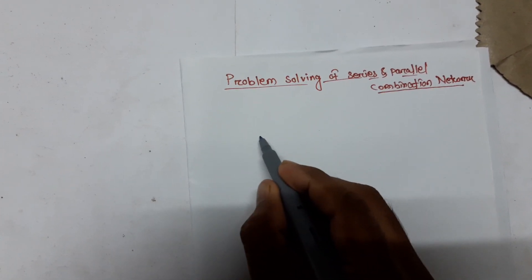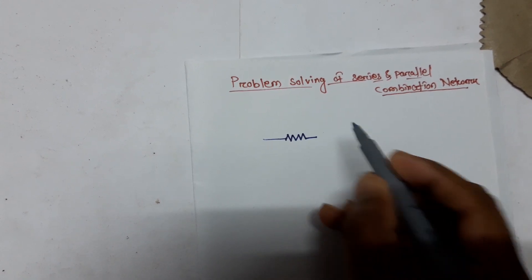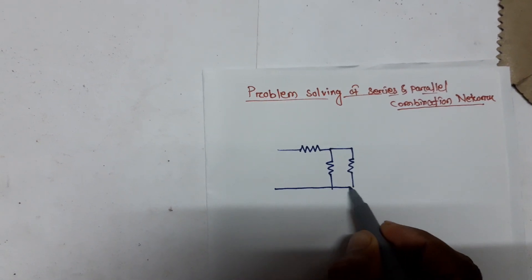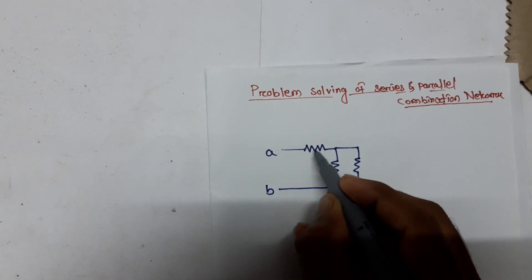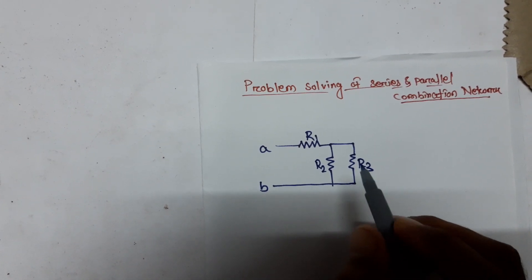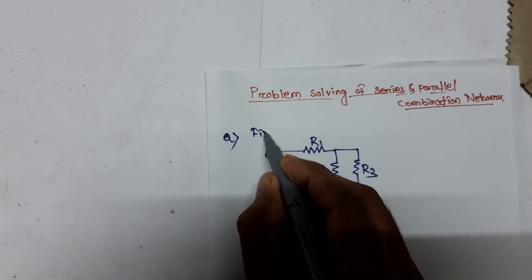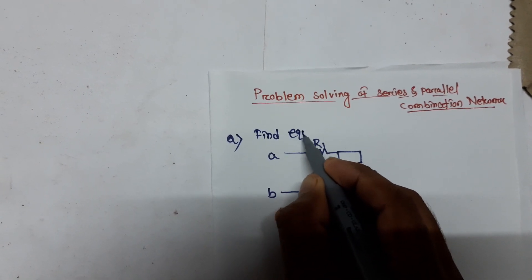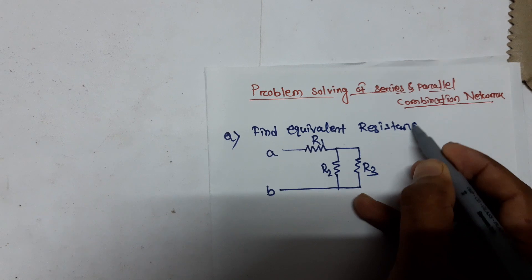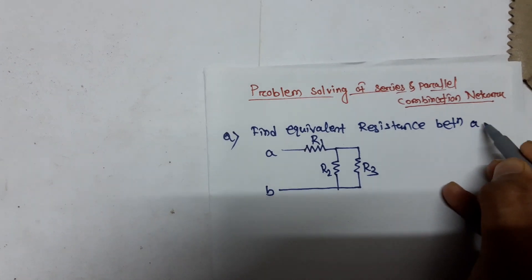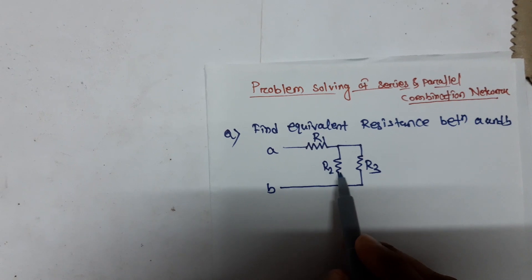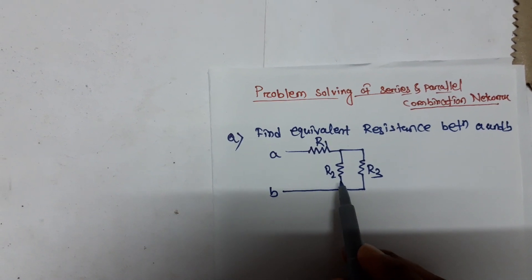Let's take an example. Let there be one resistor, another resistor — this is A and B, this is R1, this is R2, and this is R3. The question asks: find the equivalent resistance between A and B.